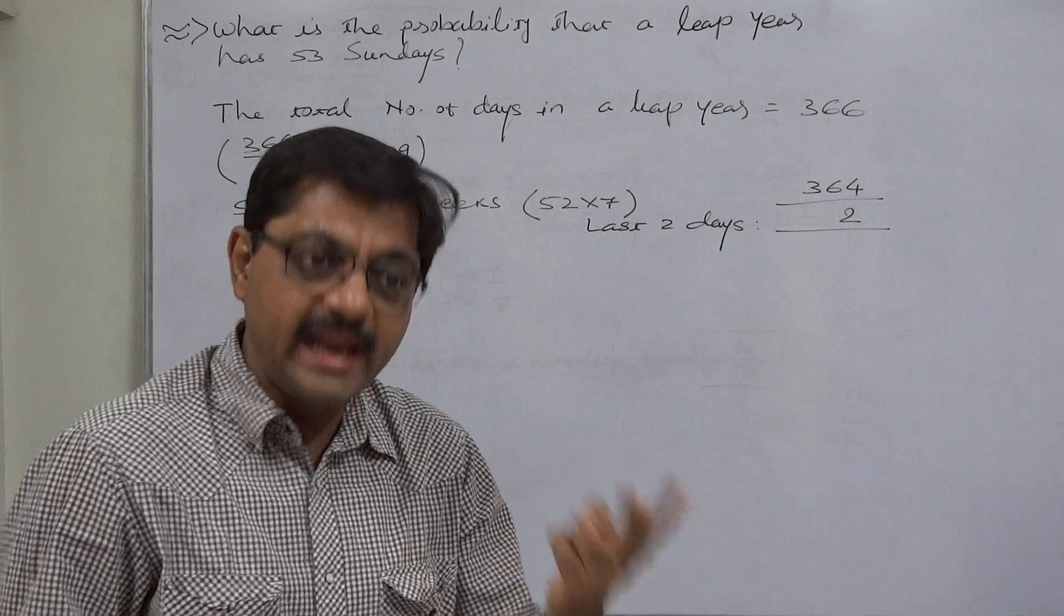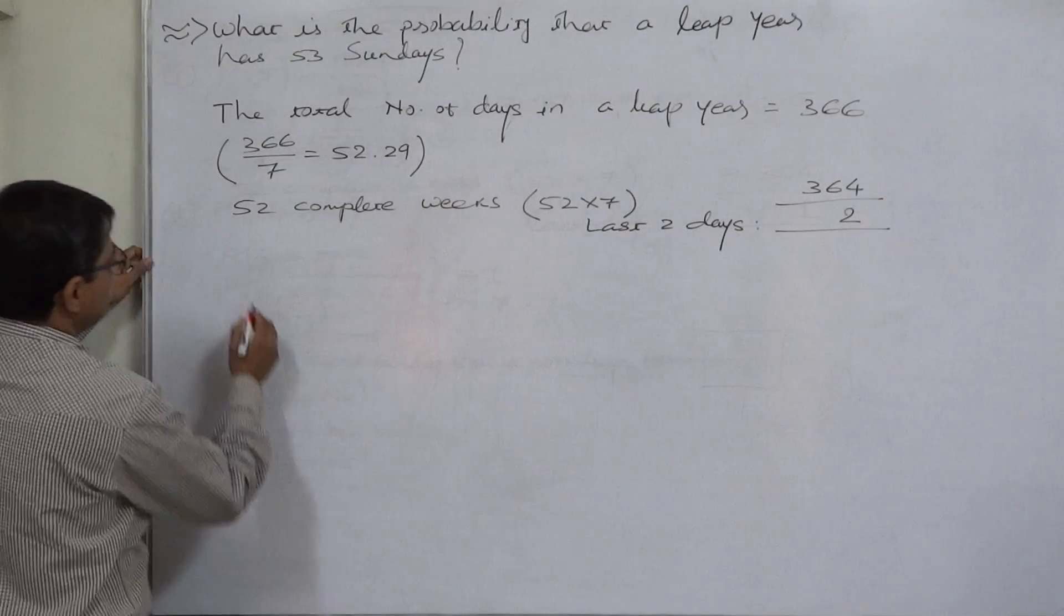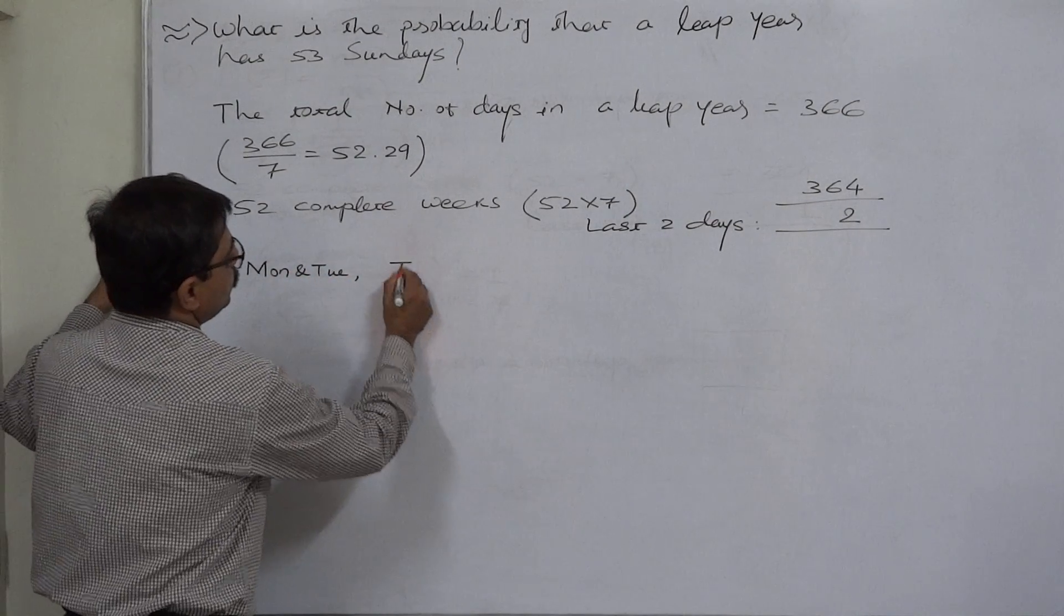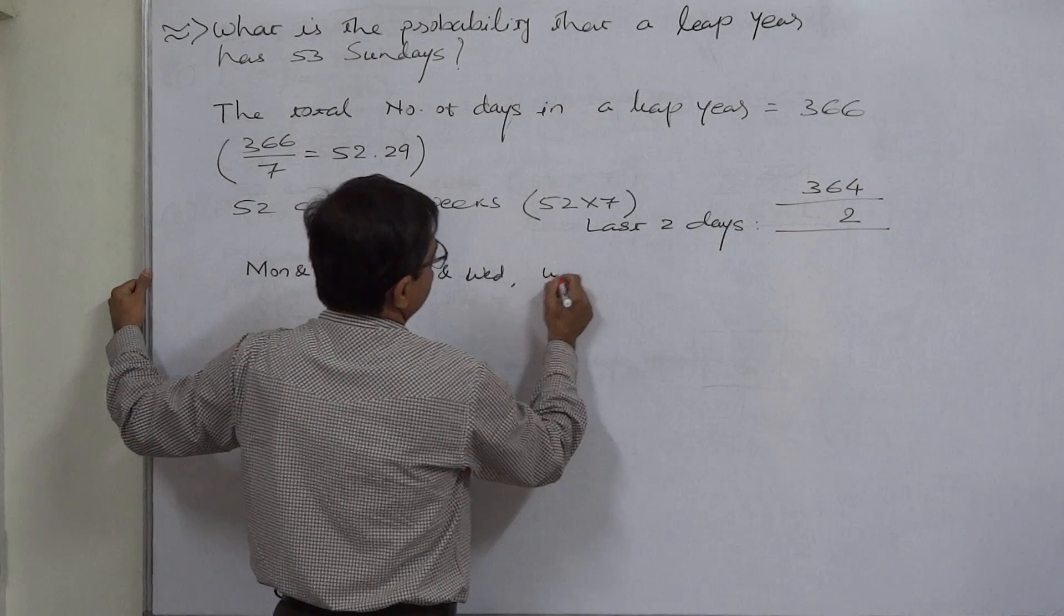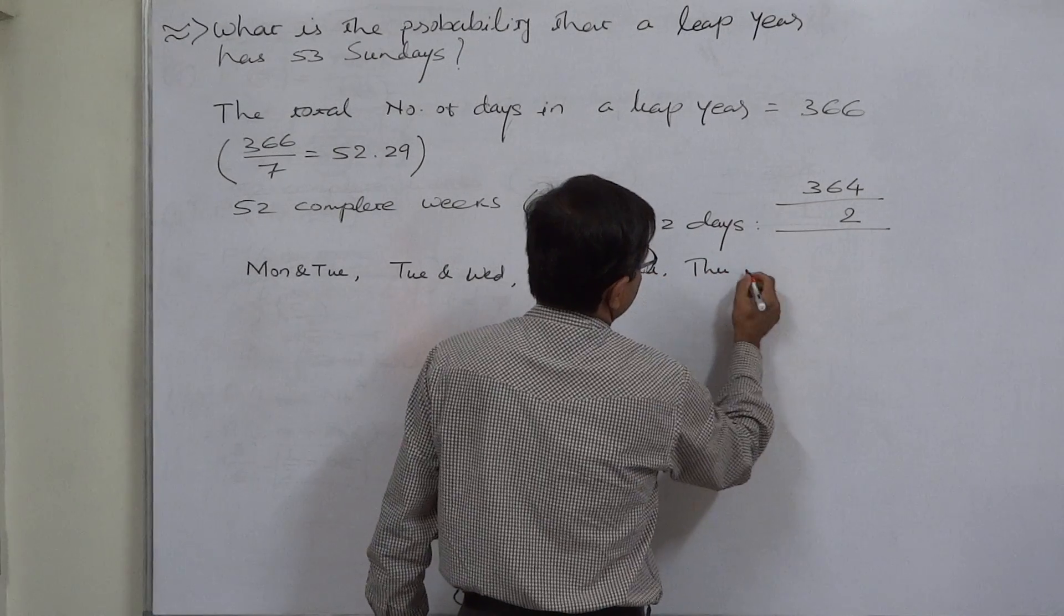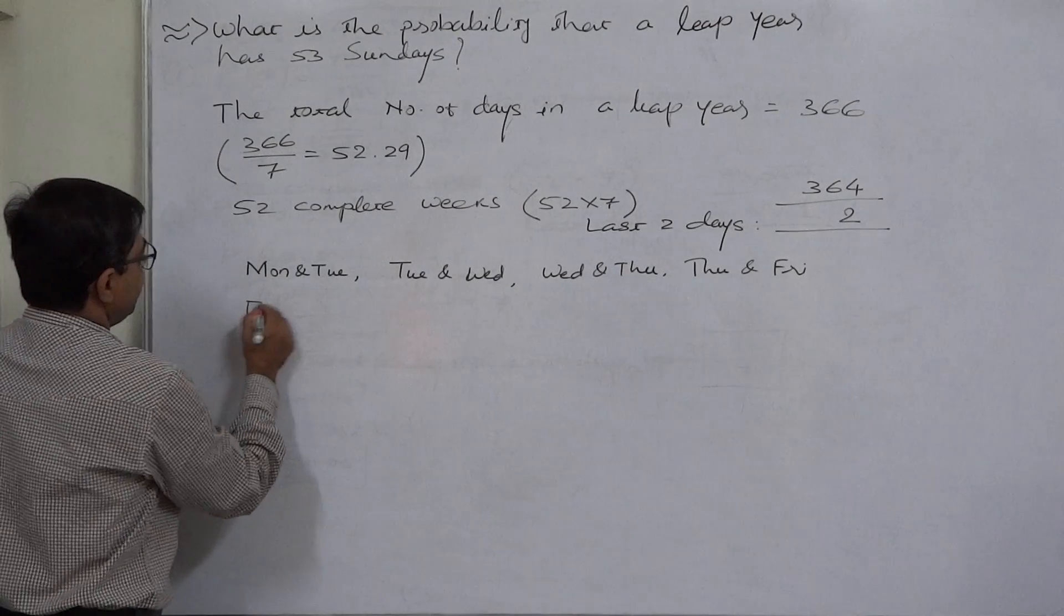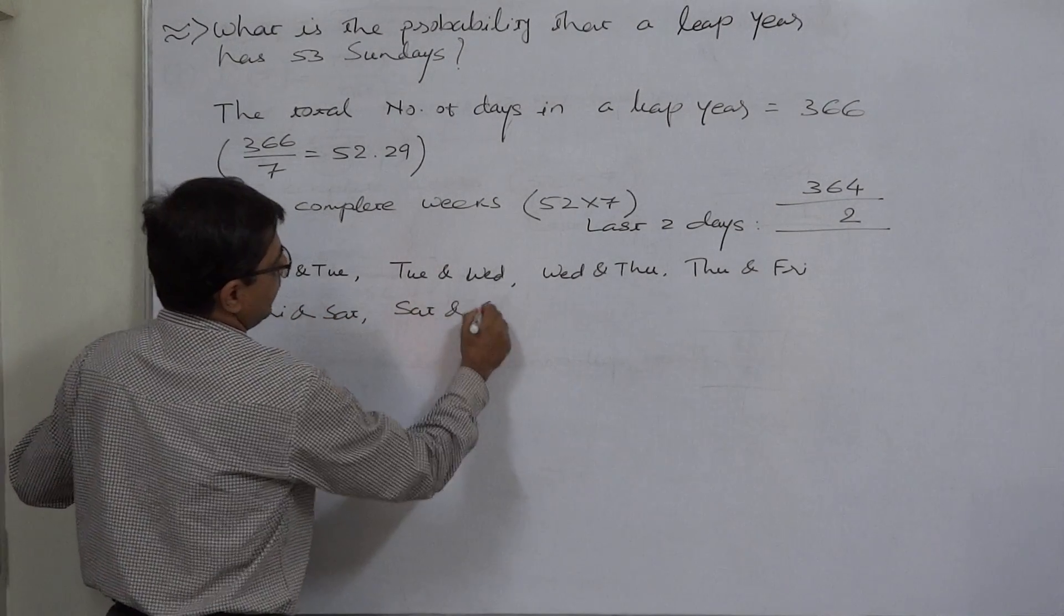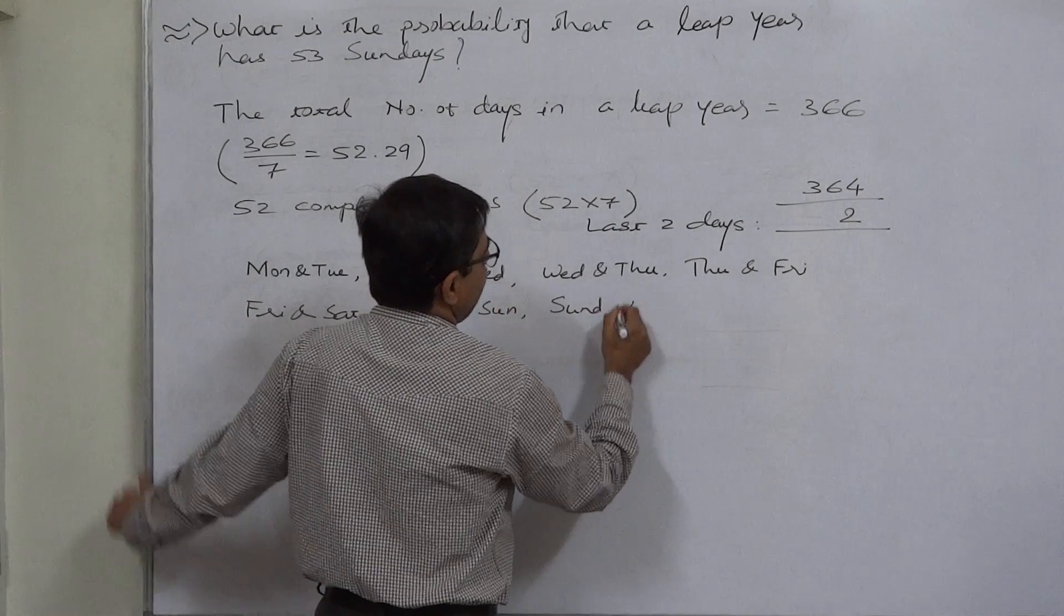Then what can these two last days be? A pair of any two consecutive days of the week. How many pairs are possible? They can be Monday and Tuesday, Tuesday and Wednesday, Wednesday and Thursday, Thursday and Friday, Friday and Saturday, Saturday and Sunday, Sunday and Monday.